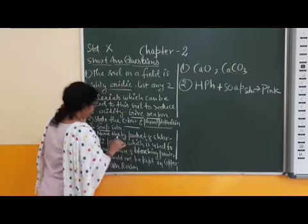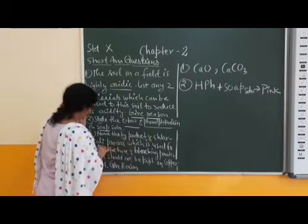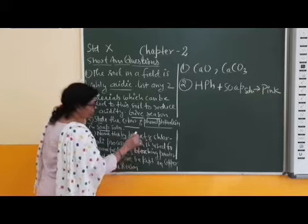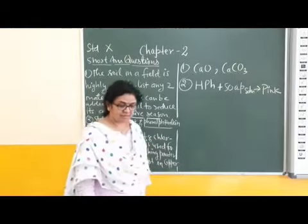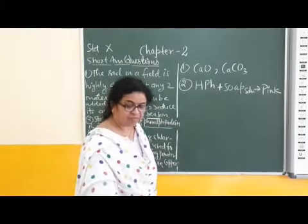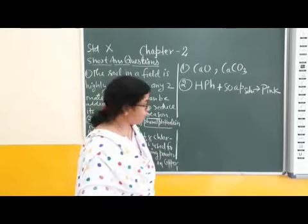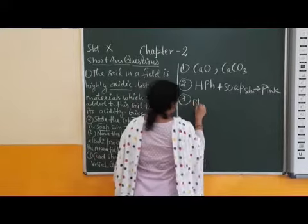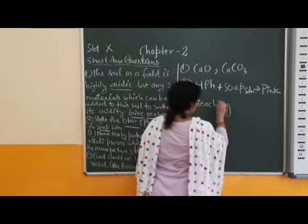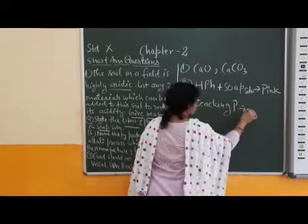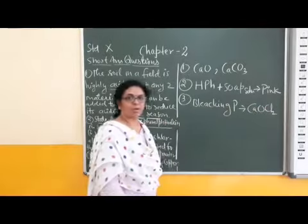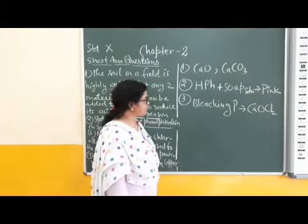Now children, name the byproduct of chloralkali process which is used for the manufacture of bleaching powder, completely indirect. Only one hint is written here which is chloralkali. Now what is bleaching powder? Bleaching powder is CaOCl2, calcium oxychloride, which is used as bleaching agent.